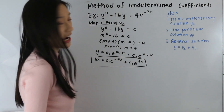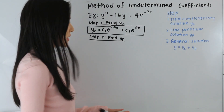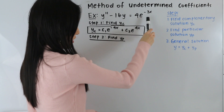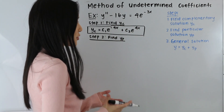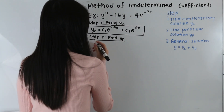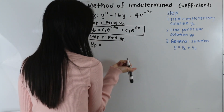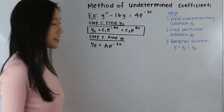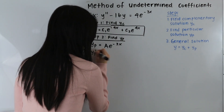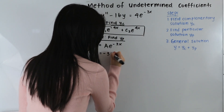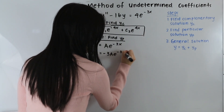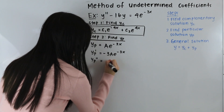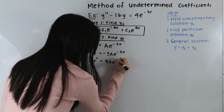Our next step is to find our particular solution yp. We take a look at the right-hand side of our differential equation — we have some constant times an exponential to the negative 3x power. So we guess that yp is equal to ae to the negative 3x. Differentiating, yp prime is equal to negative 3ae to the negative 3x, and yp double prime is equal to 9ae to the negative 3x.